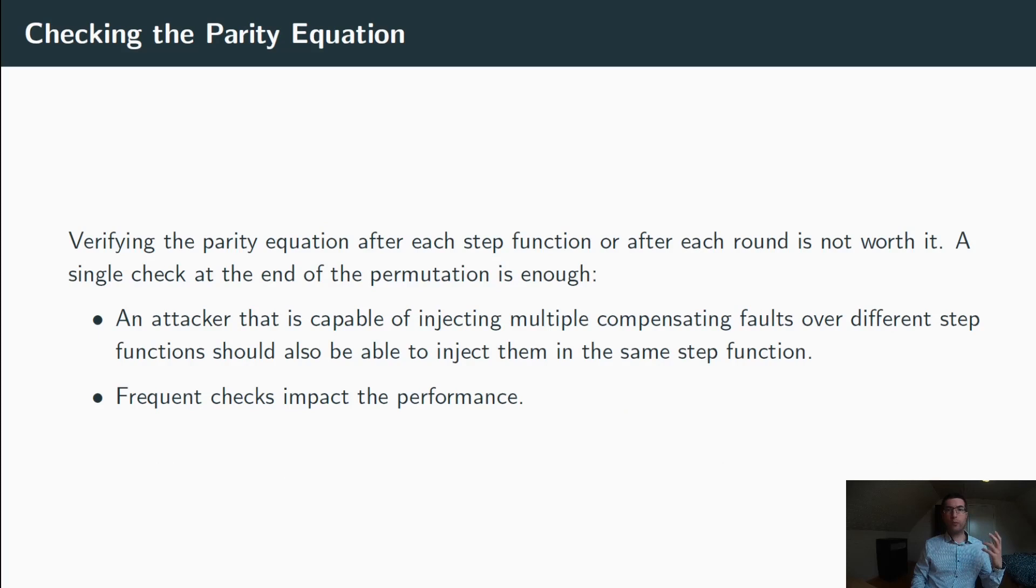One last observation that I would like to make is that verifying the parity equation after each step function is not needed. Indeed, if a fault occurs during a step function that breaks the parity equation, and if no other fault happens afterwards, then by the parity-preserving property, we know that the output of the subsequent step functions will also not verify the parity equation. That is to say that a single check of the parity equation at the very end of the permutation is enough to detect any single limb fault.